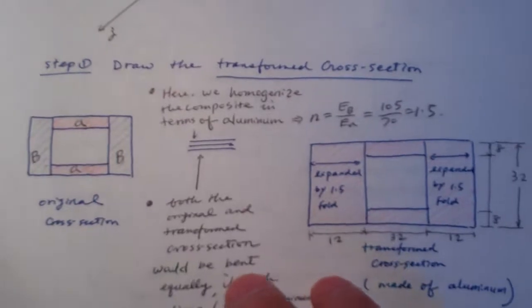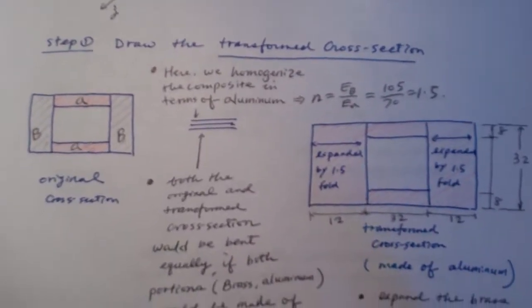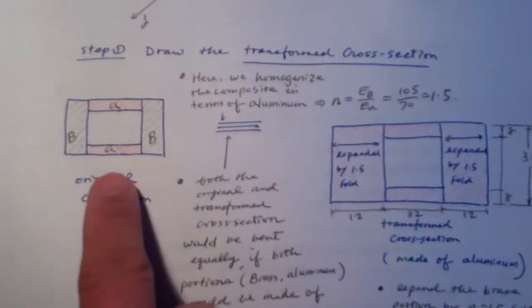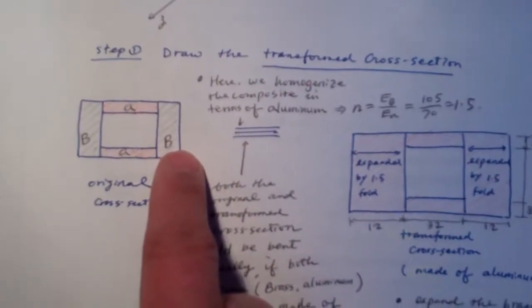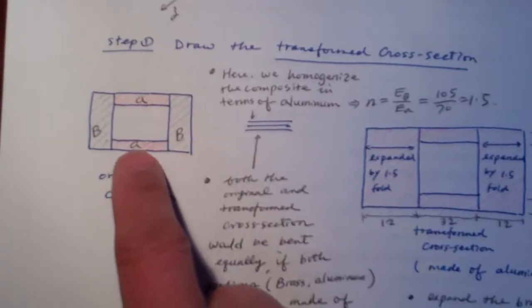And with these recognitions, the first step is we look at how to get a transformed cross-section. This is the original cross-section, which is composed of the brass, which is shown in the black, and aluminum, I shaded it in red.